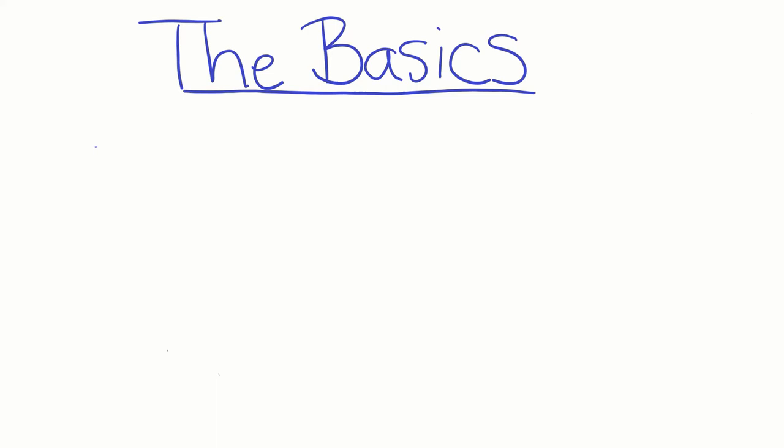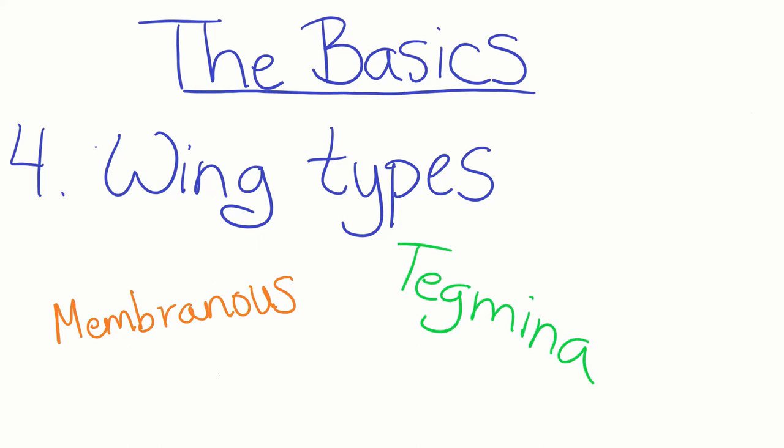Four, there are four common wing types in insects: membranous, tegmena, elytra, and hemielytra.